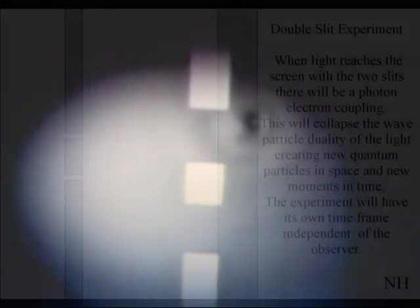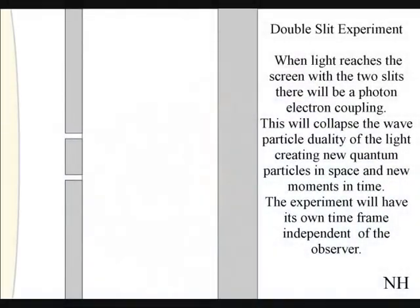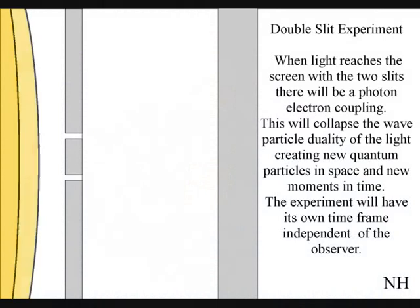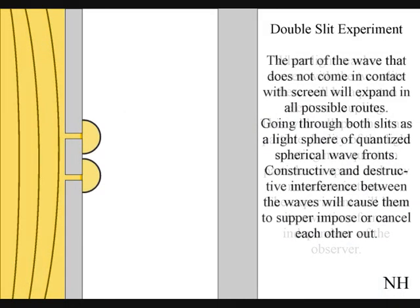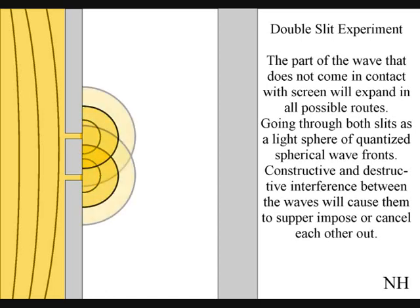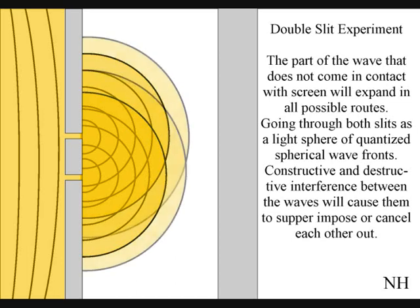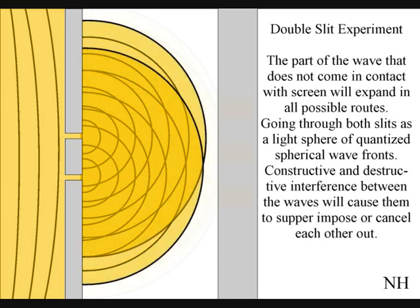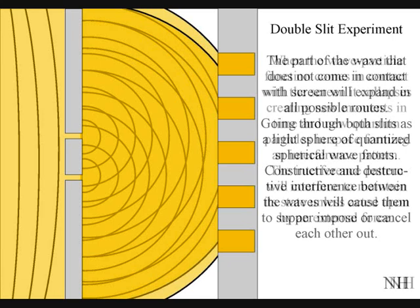When the fluid strikes the barrier with the two slits, it will emerge on the other side forming waves. Where the crest of those waves interacts, they form a large wave. Where a crest interacts with a trough, they cancel each other out.